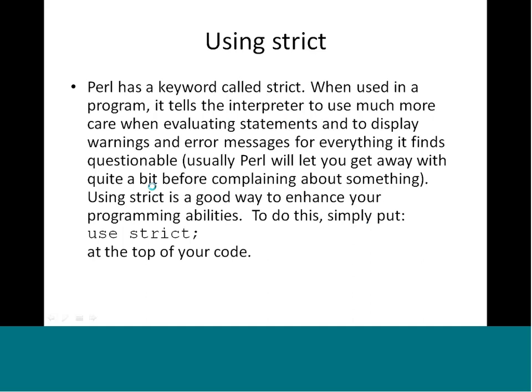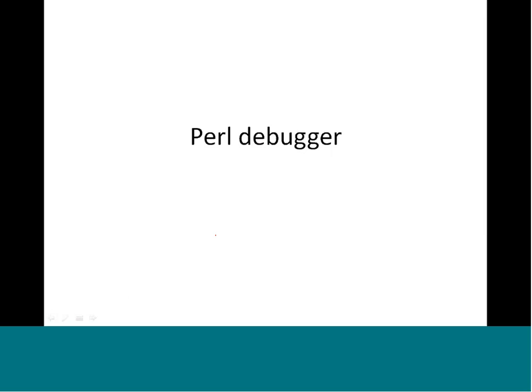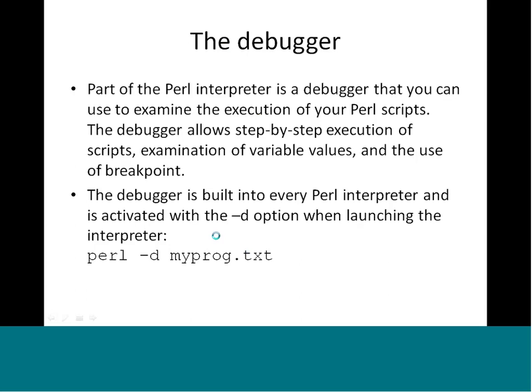Another operator you will always find in Perl programs is use strict. The Perl keyword strict tells the interpreter to use much more care when evaluating statements, and to display warnings and error messages for everything it finds questionable. Normally Perl will let you get away with quite a bit before complaining. Using strict is a good way to enhance your programming. Simply put 'use strict' at the top of the code.